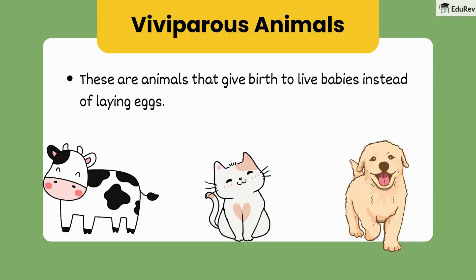Now let's talk about viviparous animals. These are animals that give birth to live babies instead of laying eggs. Examples include cows, cats, and dogs. These animals feed their babies with milk, so we call them mammals. Humans are mammals too.